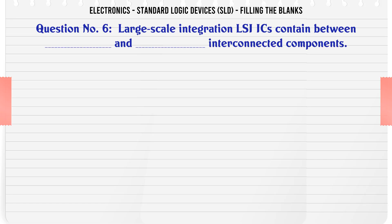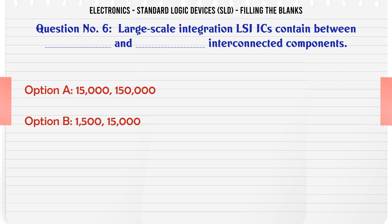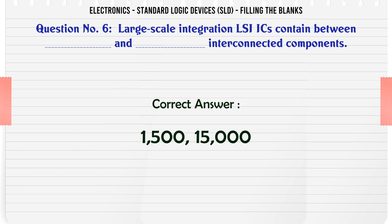Large scale integration LSI ICs contain between how many interconnected components? A 15,000 to 150,000. B 1,500 to 15,000. C 100 to 81,000. D 100 to 81,500.